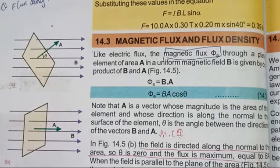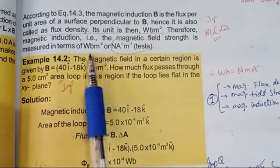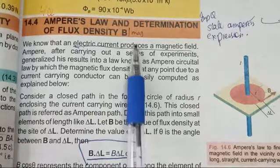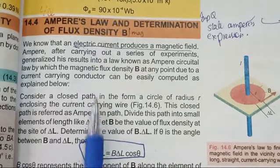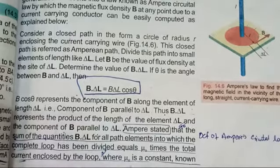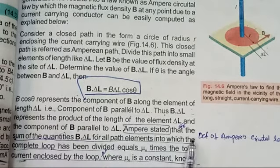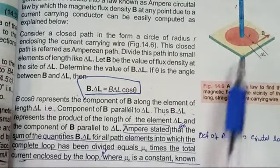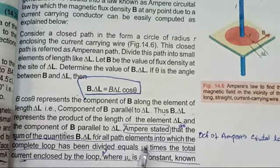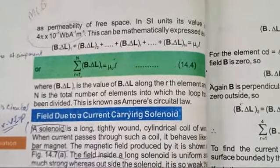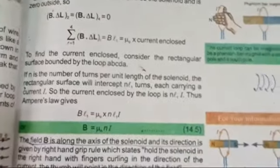Another important short question: state Ampere's Circuital Law. This is a very very important short question. You have to find B · ΔL = B · L cos θ, with the help of a diagram. Ampere stated that the sum of the quantities B · ΔL for all path elements into which the complete loop has been divided equals μ₀ times the total current enclosed by the loop, where μ₀ is a constant. The final formula of Ampere's Circuital Law gives: B = μ₀NI.